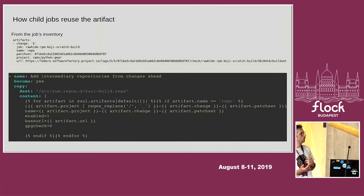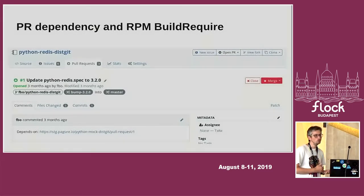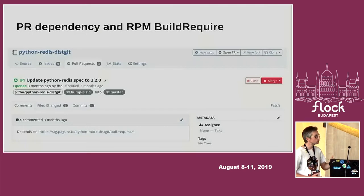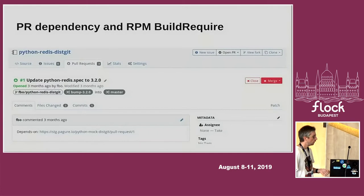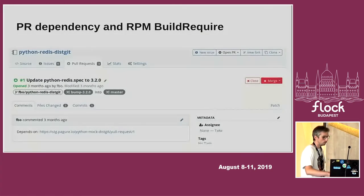To sum up, we saw how easy it is to share artifacts between jobs with Zuul. The second scenario is pull request dependencies and RPM build requires. Here we wanted to show the use of dependent pull request artifacts. We created a specific job able to build RPMs with the capability to handle RPM build requirements. On the screenshot, you see a pull request open on the Python-redis dist-git repository using the 'Depends-On' keyword pointing to pull request 1 of Python-mock dist-git. Python-mock is an RPM build requirement of Python-redis.